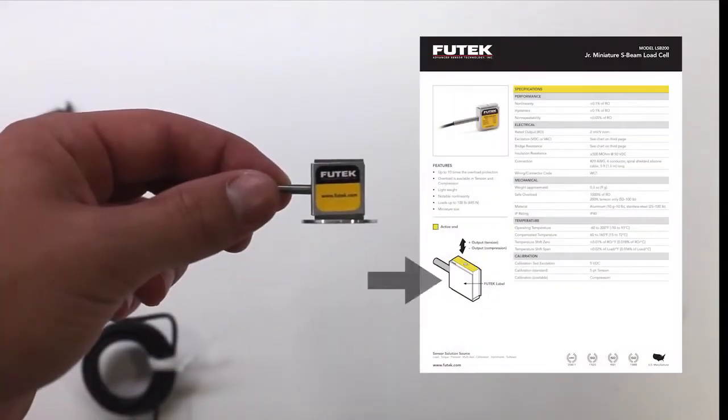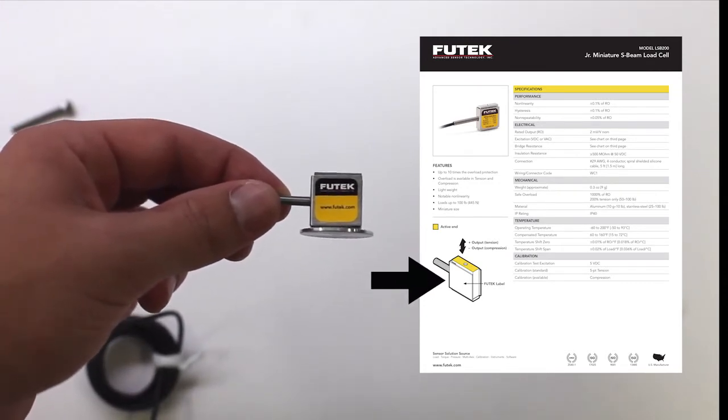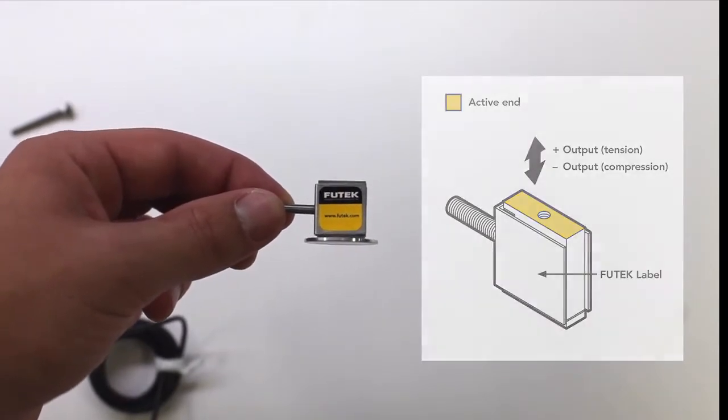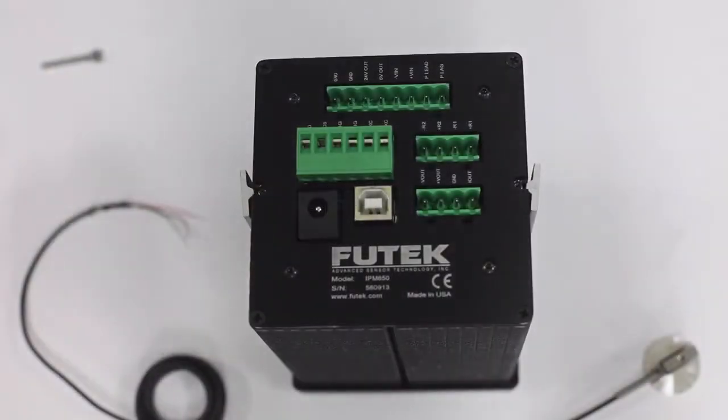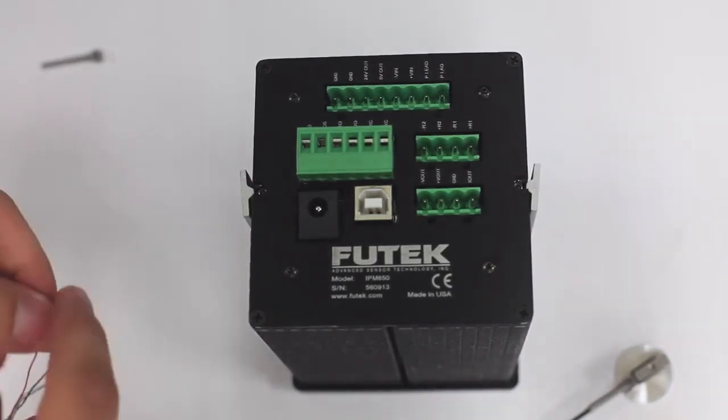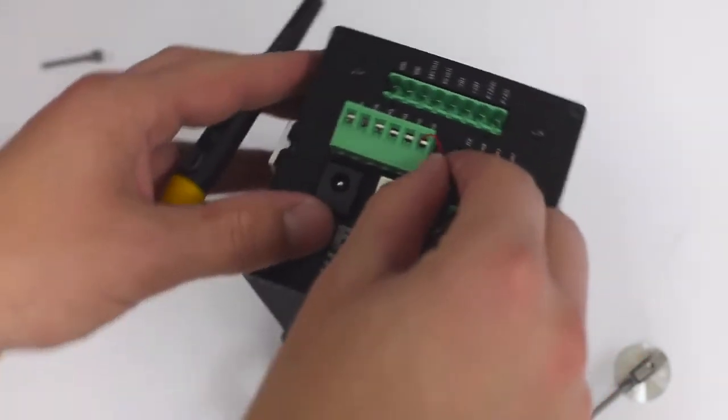It is important to note that the LSB200 and many other FuTech load cells have a designated loading surface. This is specified in the sensor spec sheet. It is also important to monitor the load cell's readings during the installation process to see if we are applying any unintended loads. We can do this using an IPM650.